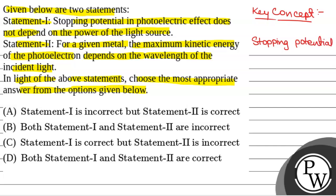Generally, Vs is equal to maximum kinetic energy divided by charge on the electron E, that is E × Vs = KE_max. Now we know that from the photoelectric effect we have hc/λ = φ + KE_max.